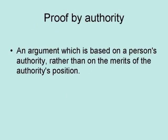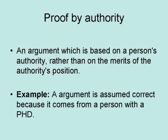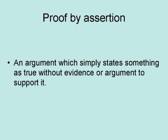A proof by authority is an argument which is based on a person's authority rather than the merits of the authority's position. For example, an argument is assumed correct because it comes from a person with a PhD. A proof by assertion is an argument which simply states something as true without evidence or argument to support it.